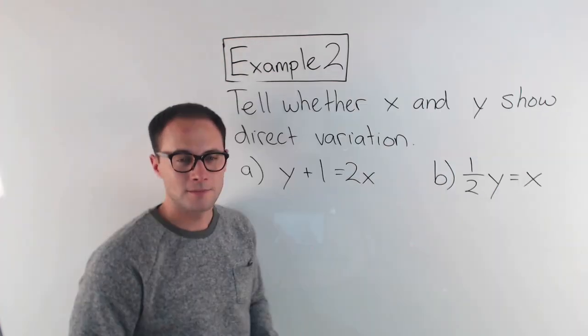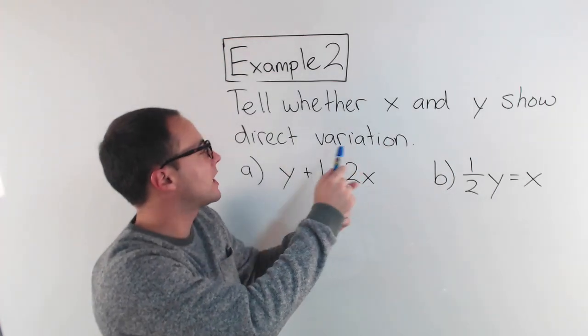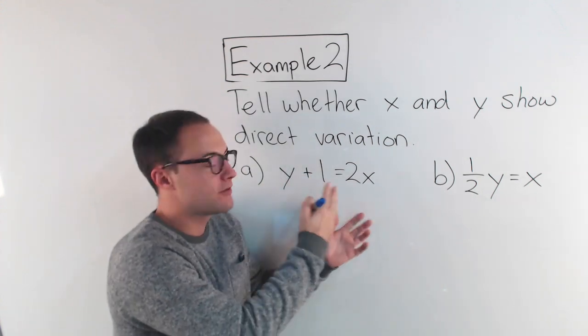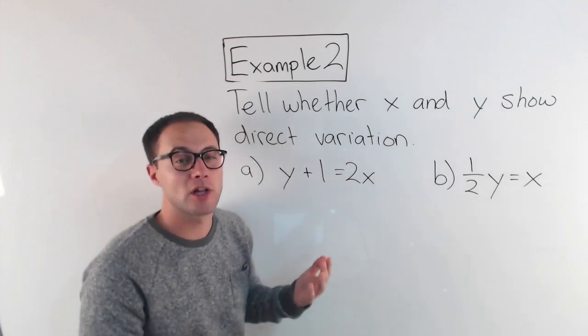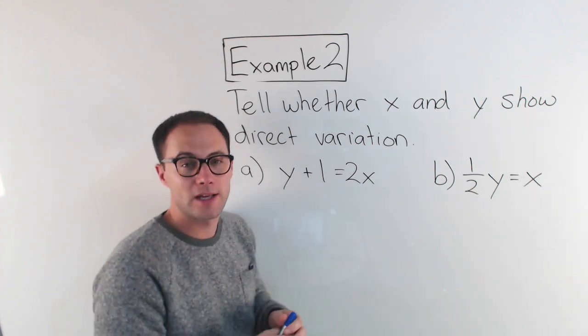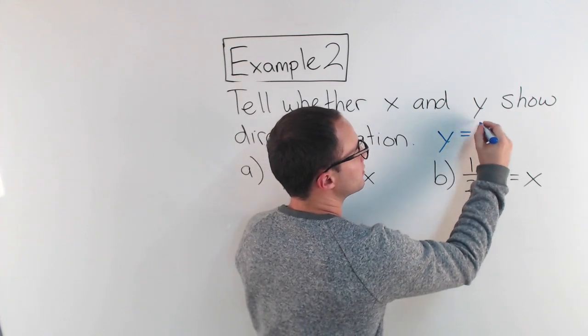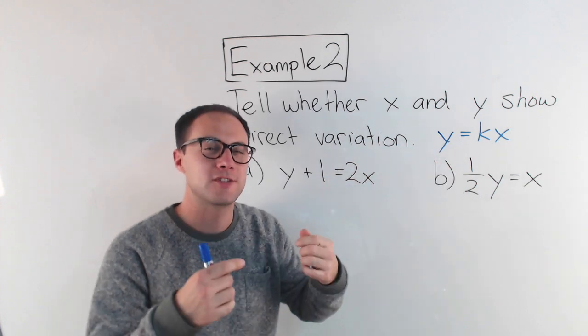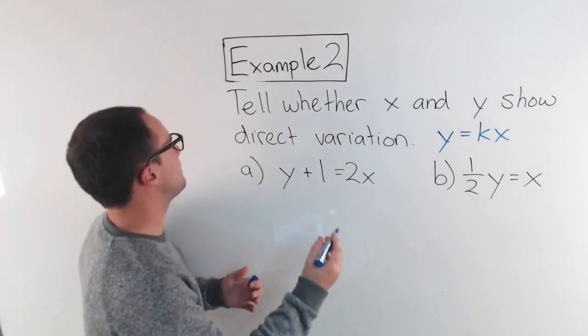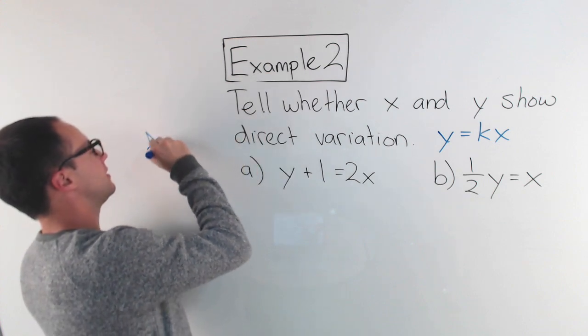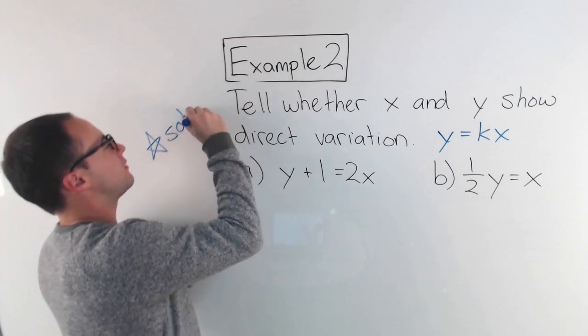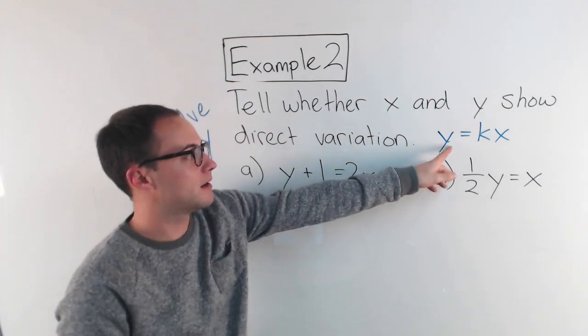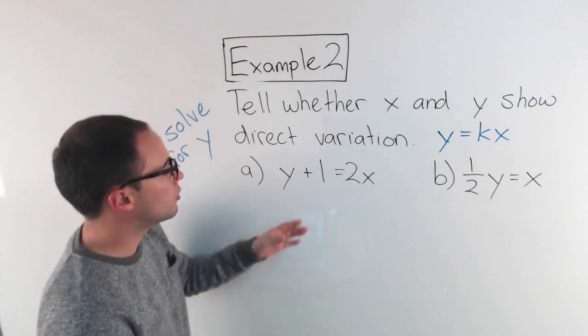Okay? Let's try another example. All right, example 2, same thing. Tell whether x and y show direct variation. But we're going to tell it in a different way. We're not going to graph each of these equations. We're not going to graph the line. Instead, we're going to look to see if we can get the equation to look like y equals kx. To do that, we're trying to get y alone, which means we're solving for y. Okay? So maybe if you want to put a little star here, solve for y. That's what we're trying to do. We're trying to get y alone. Right? We're isolating y. So here we go.